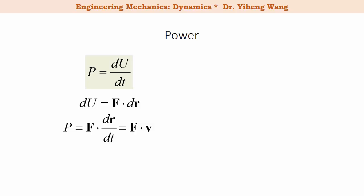Since the dot product of two vectors is a scalar, power is always a scalar, just like work or energy.